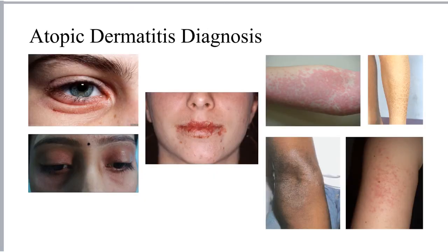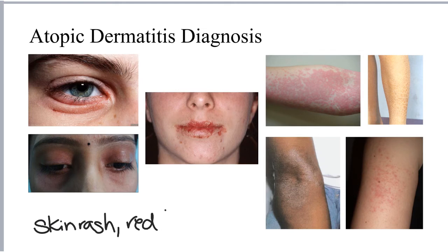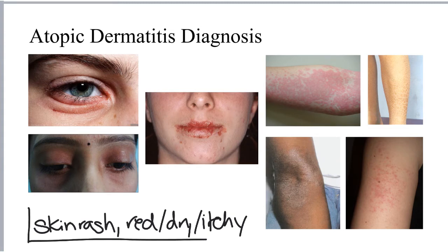Atopic dermatitis is associated with crusty, scaly skin rashes that are itchy, red, and dry. In a few moments, I will touch specifically on the clinical presentation by age, because the clinical presentation does depend on the age group involved.